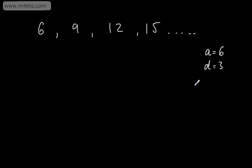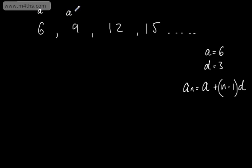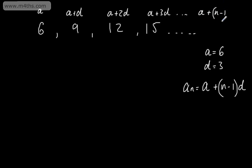We can find any term in an arithmetic sequence using the formula: a sub n equals a plus (n minus 1) multiplied by d, where d is the common difference. The sequence runs a, a plus d, a plus 2d, a plus 3d, and so on up to a plus (n minus 1)d — that is the nth term.